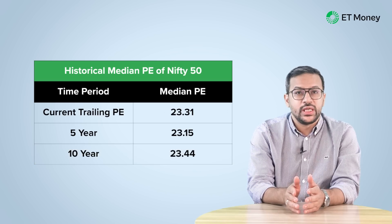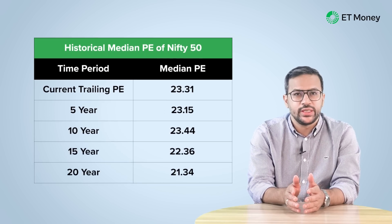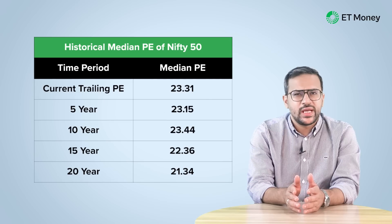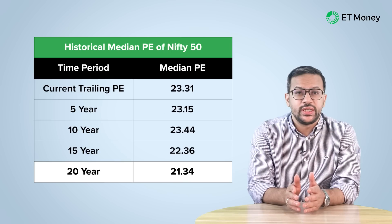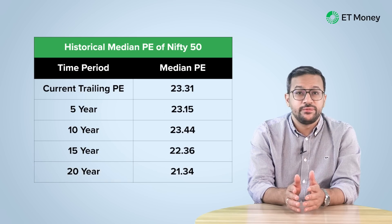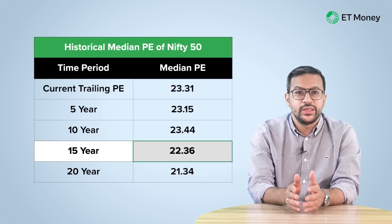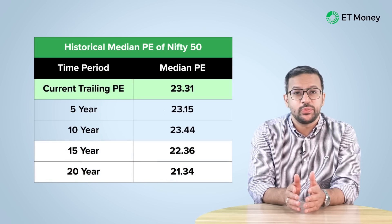However, if we take slightly longer data for 15 and 20 years, the valuation seems slightly higher. The 20-year median PE of the index is 21.33 and the 15-year median PE Ratio is 22.36. Both of these are slightly below the current PE of 23.31.